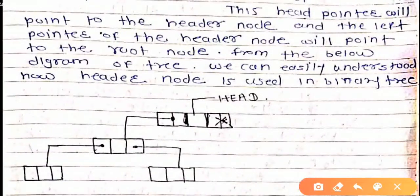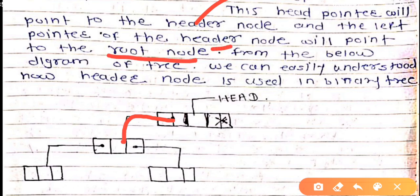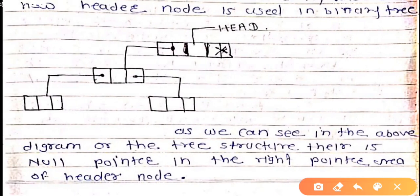The head pointer will point to the header node. From the header node, looking at the left side, it goes to the root node - that is, the header node will point to the root node. From the below diagram of the tree, we can easily understand how the header node is used in a binary tree.